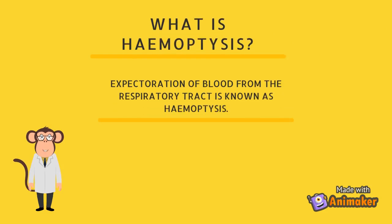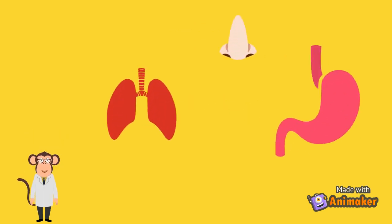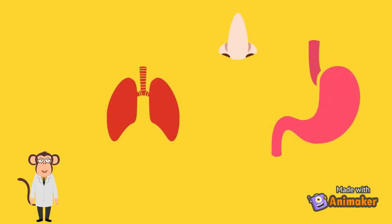Hemoptysis is defined as the expectoration of blood from the respiratory tract. It must first be assessed whether the bleeding is from the respiratory tract, the nasal cavities as epistaxis, or from the gastrointestinal tract, as the treatment for all are different.